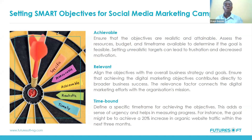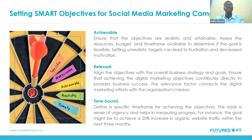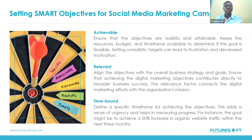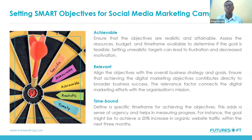After making sure it is measurable, you have to ensure your objectives are realistic and attainable. If it is not achievable, at the end of the day you'll feel disappointed and frustrated. You have to assess the resources available, your budget, and your timeframe to determine if the goal is feasible. Setting unrealistic targets leads to frustration and decreased motivation. For example, saying you want a 100% increase in organic website traffic in three months would be too large — but 20% is achievable and you can picture reaching it within that time.